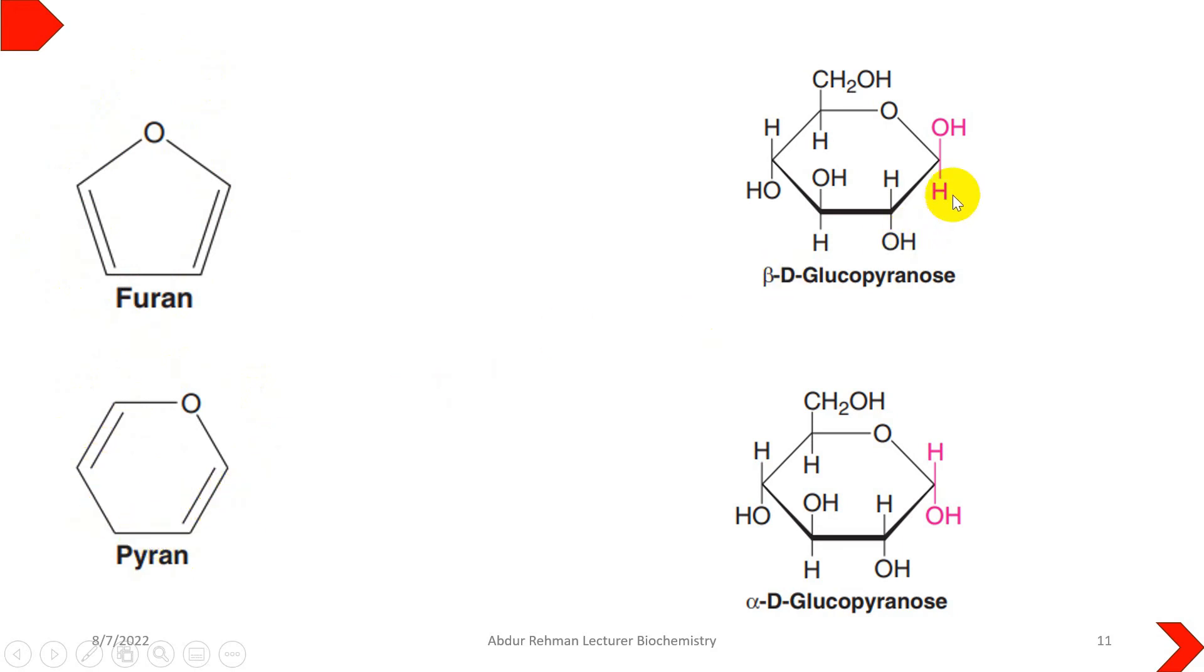Number two: look at the position of the hydroxyl group at anomeric carbon. If it is upside the ring then it is beta anomer, or if the hydroxyl group is down the ring then it is alpha anomer.